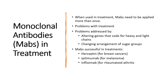Some of the monoclonal antibodies that have been used in treatments include Herceptin for breast cancer, Ipilimumab for melanoma, which is a type of skin cancer, and Infliximab for rheumatoid arthritis. These are just some examples, and you can always have a look at them if you want to read more information.